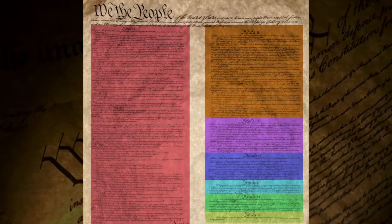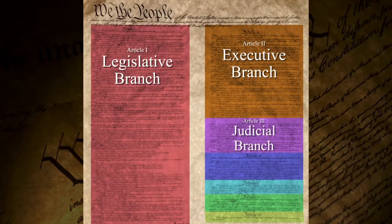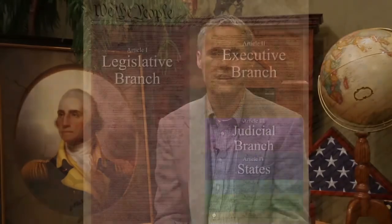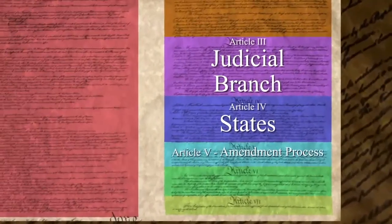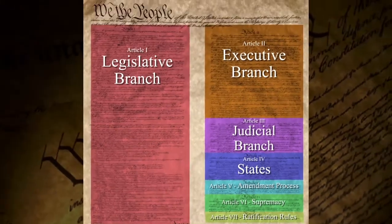There's the basic breakdown of how the Constitution is broken up into seven different parts. Each one of these parts has a specific subject. Article one is the legislative branch. Article two is the executive branch. Article three is the judicial. Article four is the states — mostly the states; it's somewhat of a catch-all, but focus mostly on the states. Article five is the amendment process. Article six is the supremacy clause. And article seven is the ratification. We'll talk about each of these more specifically a little bit later.